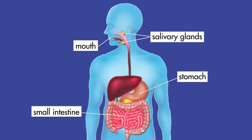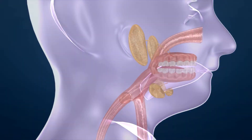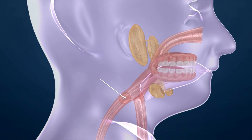The salivary glands, liver, gallbladder, and pancreas help with the process of chemical digestion. While food is being chewed, the mouth and tongue press the food into a soft, round ball called a bolus.